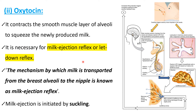The milk ejection reflex is the mechanism by which milk is transported from the breast alveoli to the nipple. The actual place of milk production is in the alveoli cells, and from that place to the nipple region, the milk has to be transported — that mechanism is called the milk ejection reflex. The milk ejection reflex is always initiated by suckling; if there is no suckling, there is no milk ejection reflex.